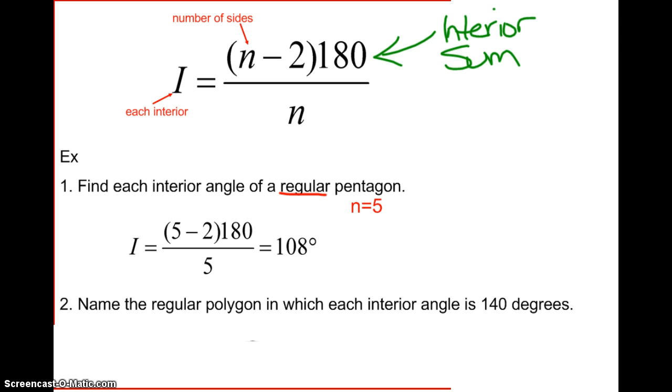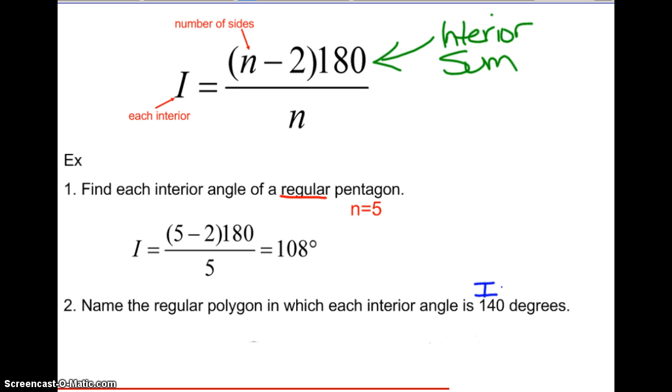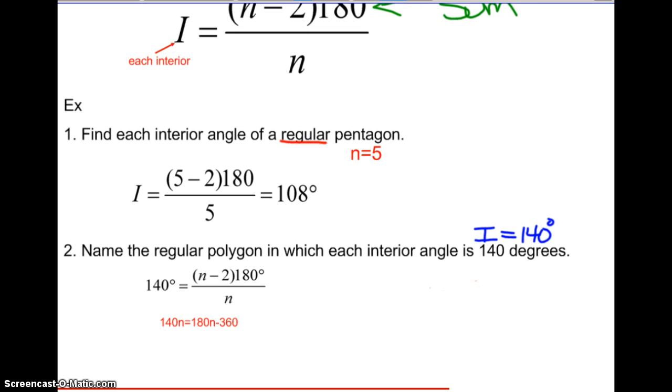So we know that each interior angle is 108 degrees. But if we had to go backwards, and we found out that each interior angle is 140 degrees, we need to be able to work backwards. So we say 140 degrees is equal to n minus 2 times 180 divided by n. So we multiply n to the other side. And then we also distributed the numerator. So we move this up here, and we distributed. So that was two steps in one. We subtract our 180n. So we have a negative on both sides, so we're okay. So we have negative 40n equals negative 360. And we find out we have a nine-sided figure.